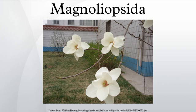In the Takhtajan system and the Cronquist system, the name Magnoliopsida was used for the group known as Dicotyledons. The Takhtajan system used this internal taxonomy.